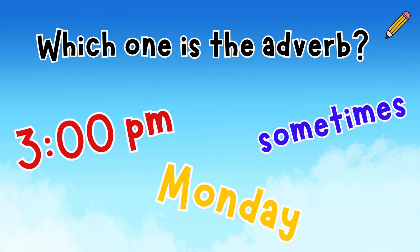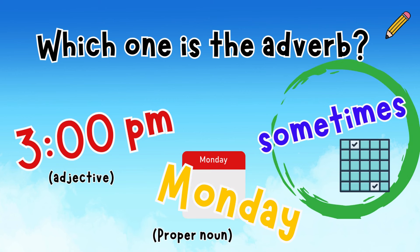Let's play again. Which one is the adverb? Is it 3pm, Monday, or sometimes? Write your answer. 3pm is an adjective — it's describing when. Monday is a proper noun; it starts with a capital letter. That means sometimes is the adverb. It answers the question when. When does he go to the park? Sometimes.